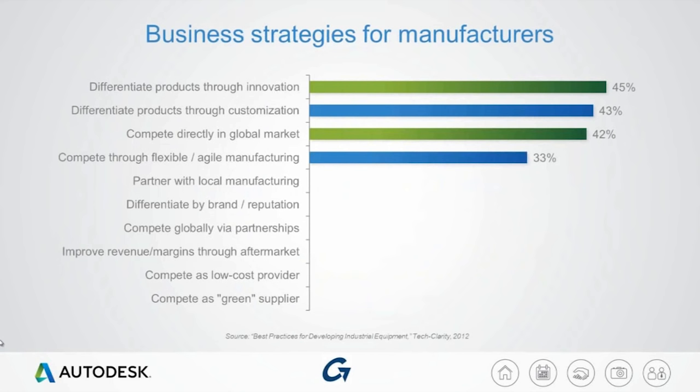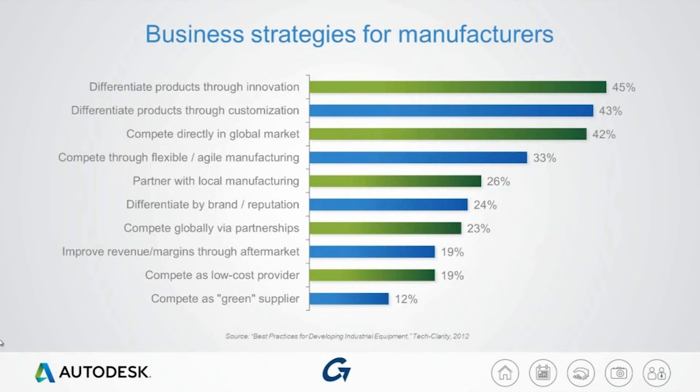A TechClarity study gives us some business background here. They identified the most common business strategies that manufacturers are putting in place to address these challenges. Not surprisingly, product differentiation through innovation and customization, along with competing in the global market space, are the top three business strategies for growth. The ability to create flexible and agile products and partnering with local manufacturing businesses are also in the top five.